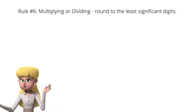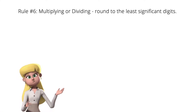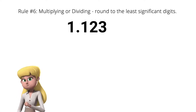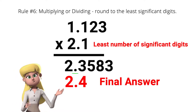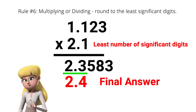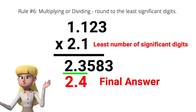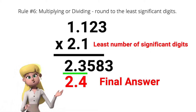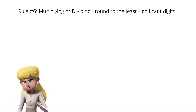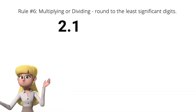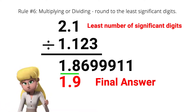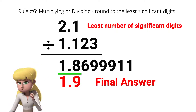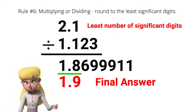And for the last rule, rule number 6: when multiplying or dividing numbers, we must round the answer to the least number of significant digits. If I multiply 1.123 by 2.1, we get 2.3583, but the final answer must be 2.4, because 2.1 has 2 significant digits and has the least number of significant digits. From 2.3583, since the next adjacent digit of 3 is 5, we round up to 2.4. Same thing with division: if I divide 2.1 by 1.123, we get 1.8699911, but the final answer must be in 2 significant digits, so we round up to 1.9, because of the digit 6 next to digit 8.